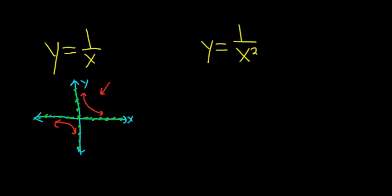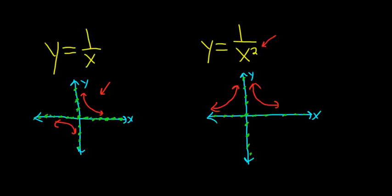And 1 over x squared looks kind of similar. Here's the y-axis, here's the x-axis. It's convenient because this one also has a horizontal asymptote on the x-axis and a vertical asymptote on the y-axis. The graph is very similar except it goes up in both directions, so it looks like a volcano. I always think of this as the volcano function. Whenever you see the squared, think of it as both going up.